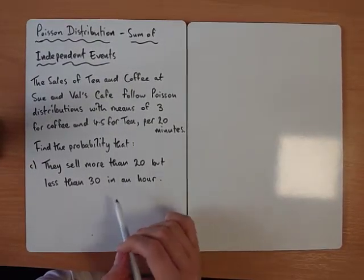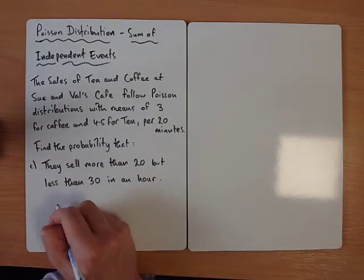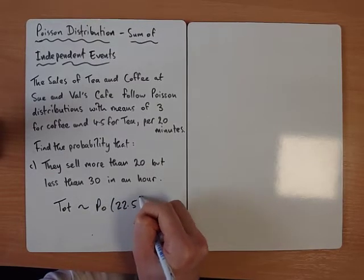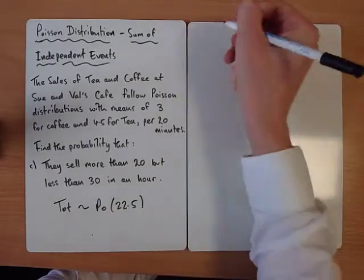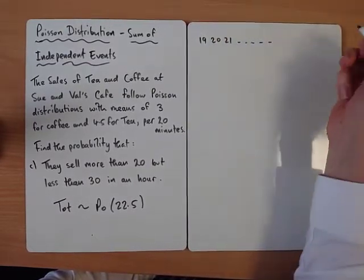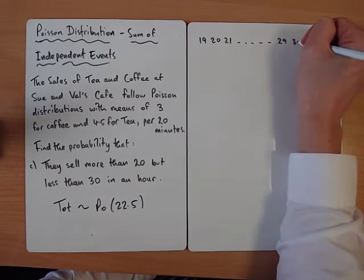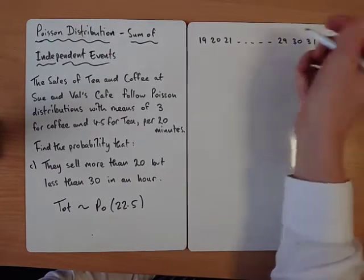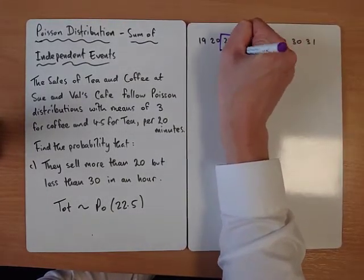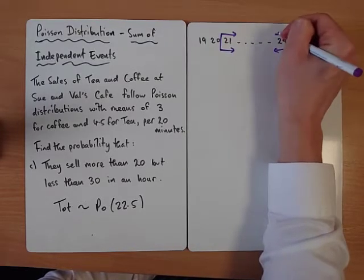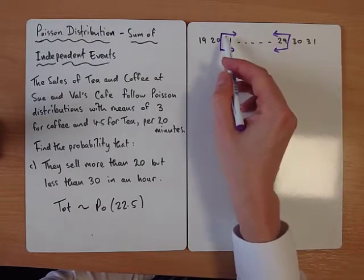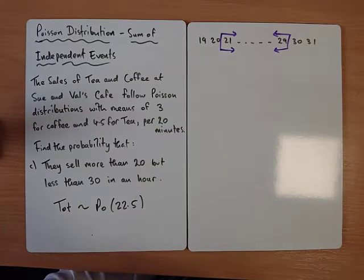So now we're thinking about more than 20 but less than 30. We're still in an hour, so the total follows a Poisson of 22.5 within one hour. More than 20, less than 30, we want to include these values. So more than 20 would be 21, less than 30 would be 29. So we want some way of adding up all these probabilities between 21 and 29.